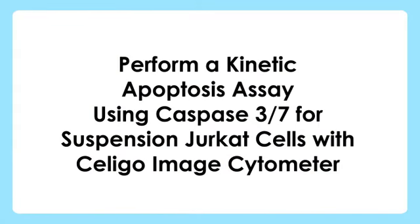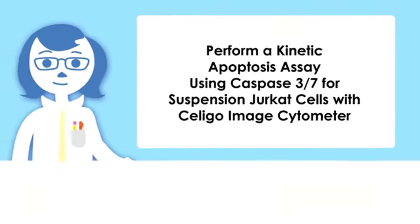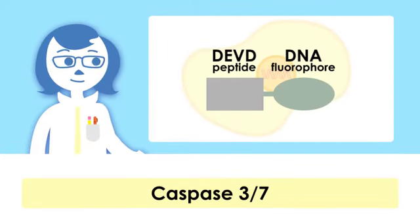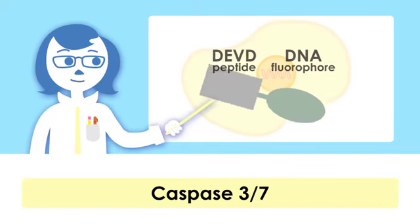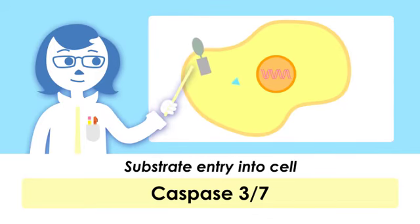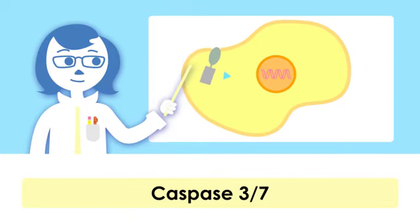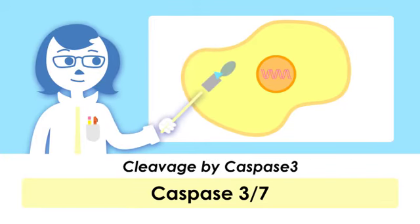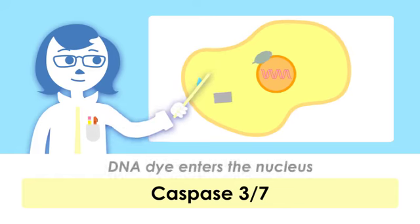Let me first take a moment and describe the assay principle. DEVD is a caspase-3-7 specific sequence that is coupled with a DNA dye molecule. This substrate can freely diffuse across the cell membrane in live cells. Once inside apoptotic cells, the caspase-3-7 protein recognizes and cleaves the DEVD sequence and releases the DNA probe.